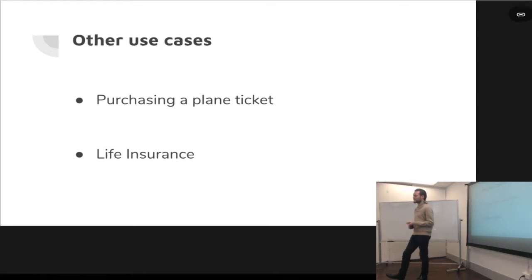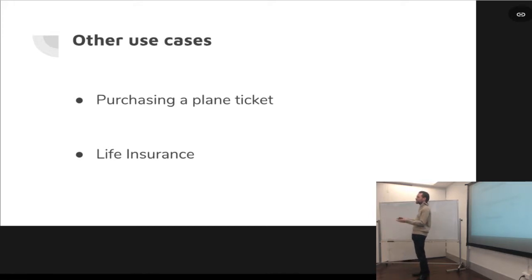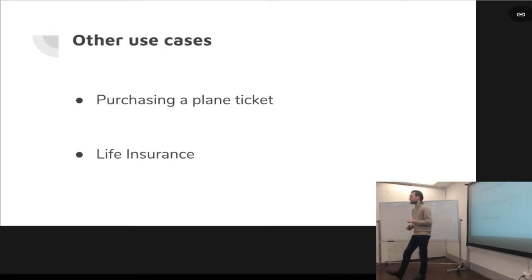Another really useful use case is with anything in the insurance industry. If you take a look at life insurance, you have someone who pays monthly premiums. Once they die, there's a benefit given to whoever they named as beneficiary. All of that could be automated in a smart contract. A person would pay premiums, name the beneficiary, and once a reported death is sent to the blockchain, the funds would automatically transfer.